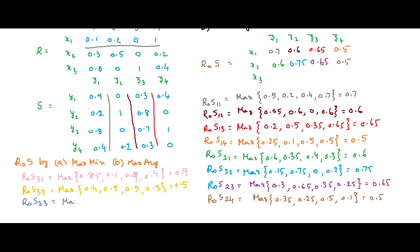For R∘S(3,3): average of 0.8 and 0.3 is 1.1, divided by 2 is 0.55. Average of 0 and 0.8 is 0.4. Average of 1 and 0.7 is 1.7, divided by 2 is 0.85. Average of 0.4 and 0.3 is 0.35. The maximum value is 0.85. So R∘S(3,2) is 0.5, R∘S(3,1) is 0.9, and R∘S(3,3) is 0.85.